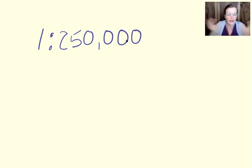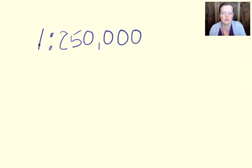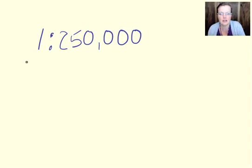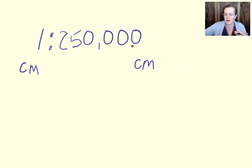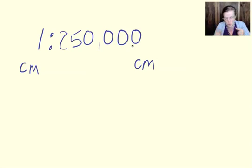It just shows you how much it's shrunk, and you can use any unit you like, so long as you use the same on this side as this side. So therefore we know that one centimetre equals two hundred and fifty thousand centimetres in real life. But you wouldn't go around measuring that kind of distance, would you?